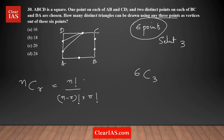I just need to apply this formula. So instead of n, replace it by six; instead of r, replace it by three. Your answer is going to be six factorial upon (six minus three) factorial times three factorial, which gives six factorial upon three factorial times three factorial.